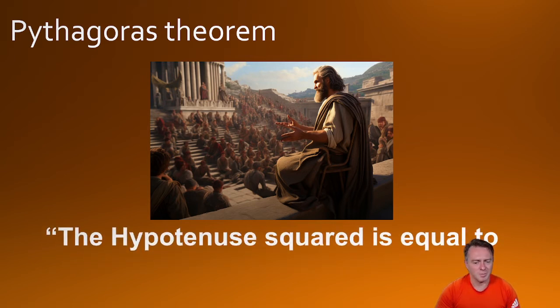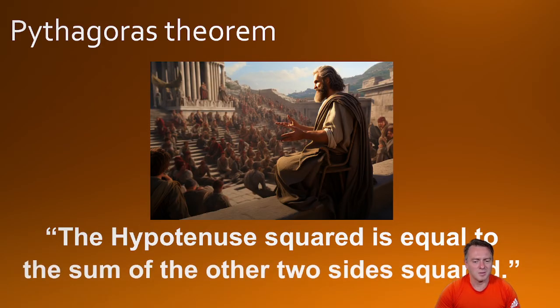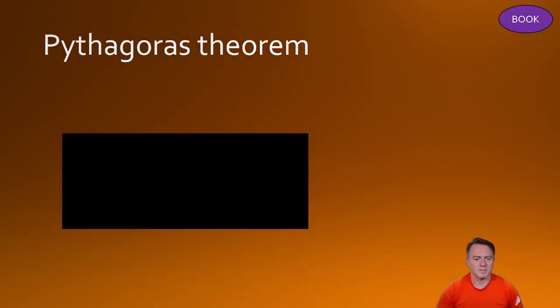The hypotenuse squared or the biggest side squared is always equal to the sum of the other two sides squared. So let's say that again, the hypotenuse squared is equal to the other two sides squared added together. And that's basically Pythagoras' theorem.